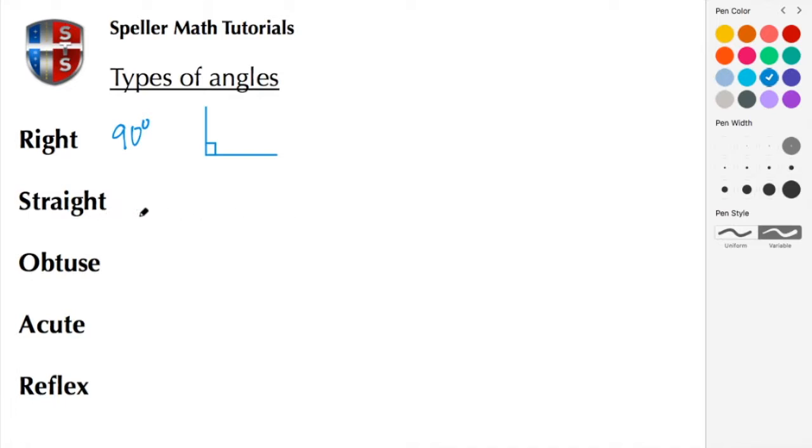Next we have a straight angle. A straight angle measures exactly 180 degrees, and a straight angle is nothing more than just a horizontal line or a vertical line or a diagonal line, it's just a line. This line normally has this notation to show that we're measuring 180 degrees.